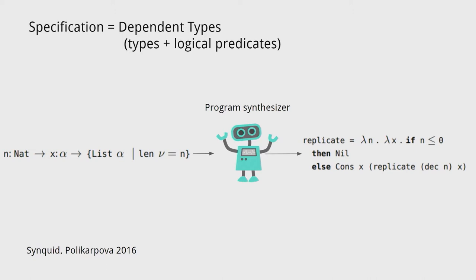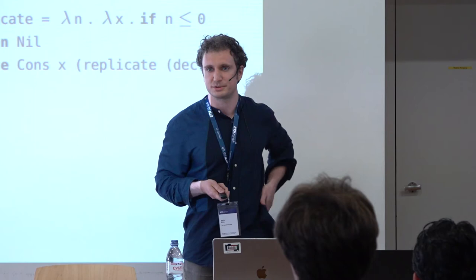One thing you might imagine is specifying a program by writing down an equation in logic or a rich type system. For example, to synthesize a 'replicate' function in a Haskell-esque functional language, you might say: I want a function that takes a natural number n and something of type alpha and returns a list of alpha, where the length of that list equals n. This is a dependent type — a refinement type — used in the system Synquid, developed by Nadia Polikarpova.